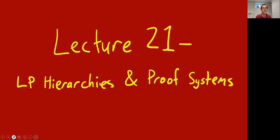Okay, so this is lecture 21. It's one more lecture on the subject of linear programs and semi-definite programs for constraint satisfaction problems and other optimization problems, but it's also going to mix together with another topic in computer science theory, namely proof complexity and proof systems.